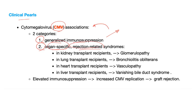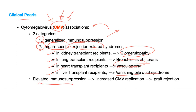Examples of organ-specific CMV complications: in kidney transplant recipients, they can get CMV-associated glomerulopathy. In lung transplant recipients, bronchiolitis obliterans. In heart transplant recipients, vasculopathy. In liver transplant recipients, vanishing bile duct syndrome. All of this is related to CMV. Elevated immunosuppression leads to increased CMV replication, increasing the risk of graft rejection.